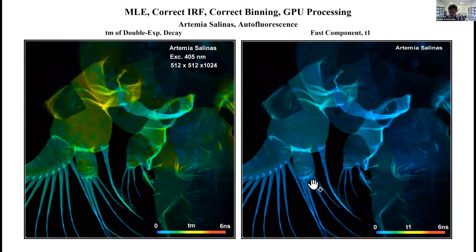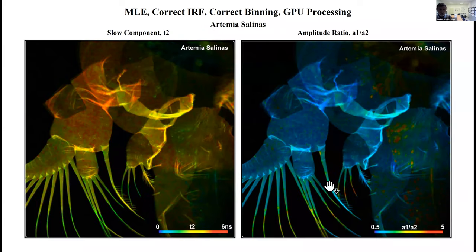If you put this all together—maximum likelihood, correct IRF, correct binning, GPU processing—you are able to record and analyze wonderful images. I couldn't resist to show you some of them. This is Artemia salina, a little salt water shrimp. This is autofluorescence image lifetime.